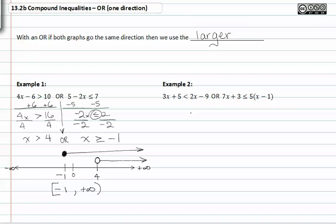In example two, we do the same thing: solve for x. We get x < -14, or subtracting three from both sides,